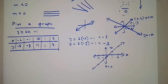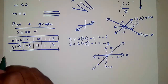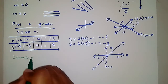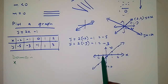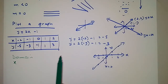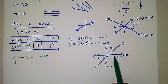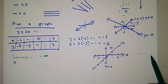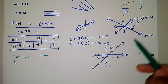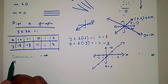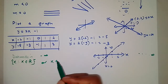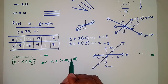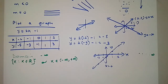Now let's look at the domain. We are looking for the set of x values where the graph exists. Going in both directions — negative infinity and positive infinity — there is nowhere where this graph does not exist. So the domain is: x is an element of real numbers, or x ∈ (-∞, +∞).